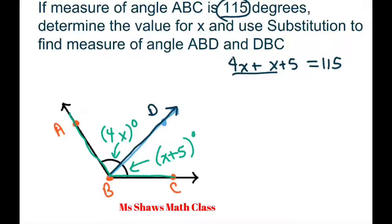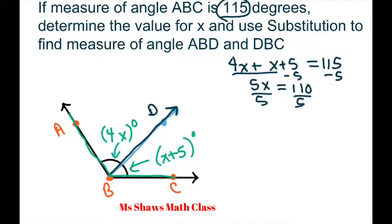We collect like terms to get 5x, then subtract 5 from both sides to save time, so 5x equals 110. Divide both sides by 5 and you get x equals 22.